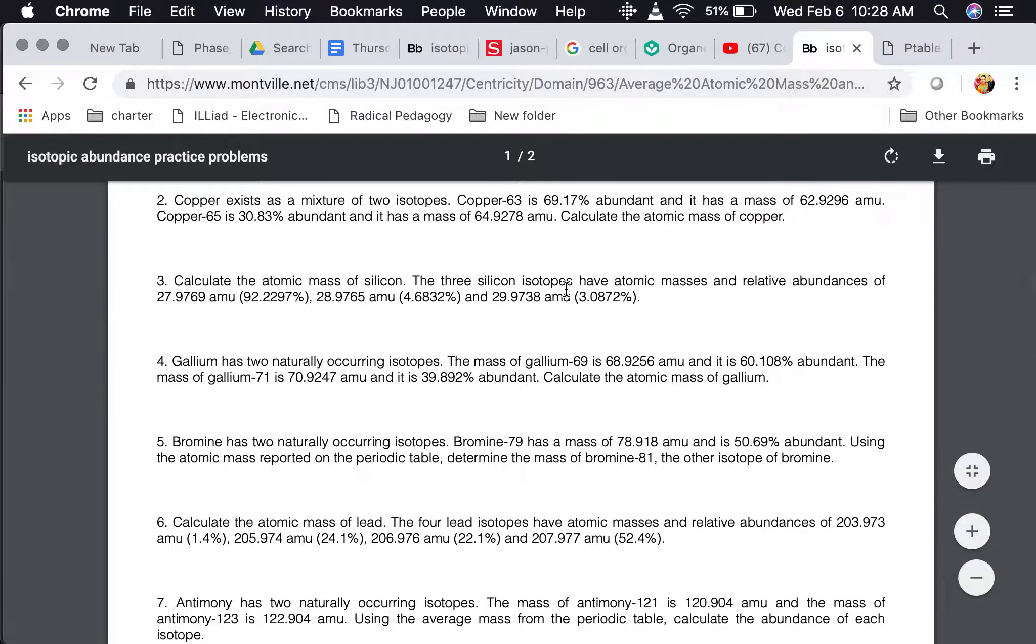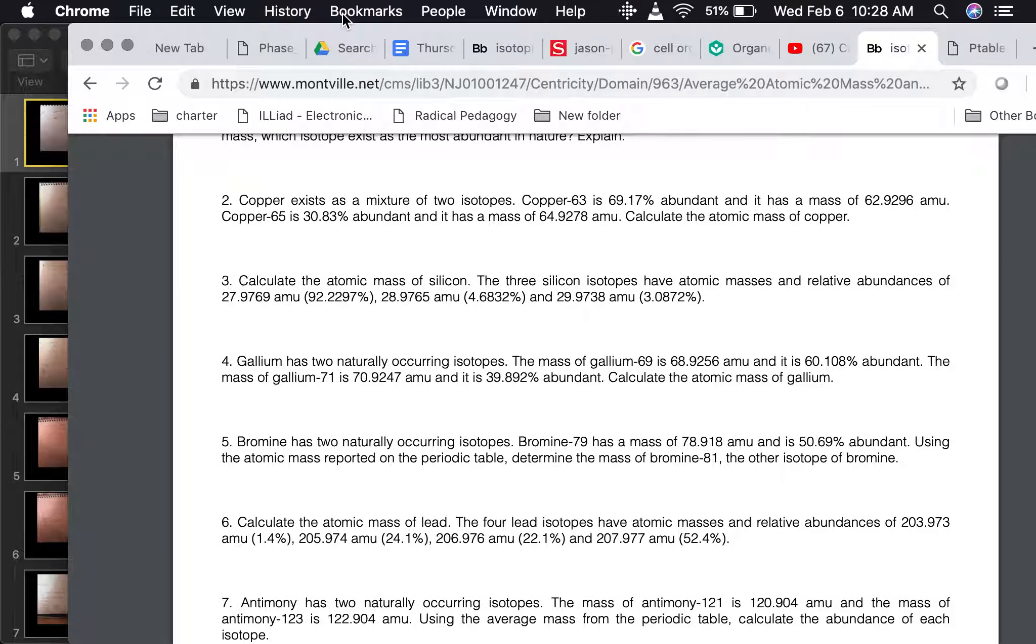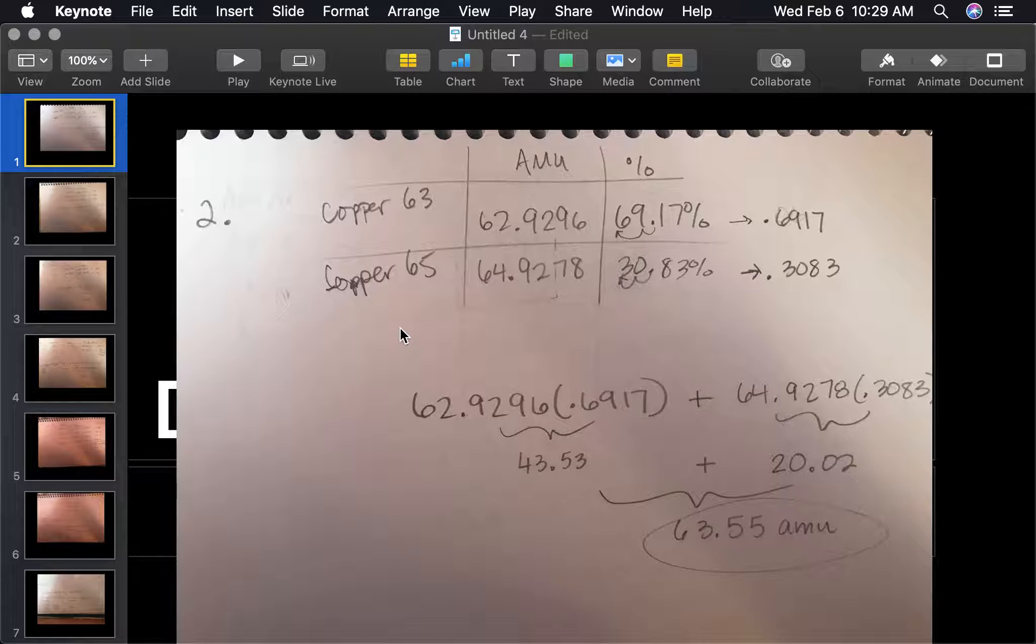Now moving on to number two. Copper exists as a mixture of two isotopes. Copper 63 is 69.17% abundant and has a mass of 62.9296 AMU. Copper 65 is 30.83% abundant and has a mass of 64.9278 AMU. Calculate the atomic mass of copper. For me, I like to draw the little table because I like to put all my information there.